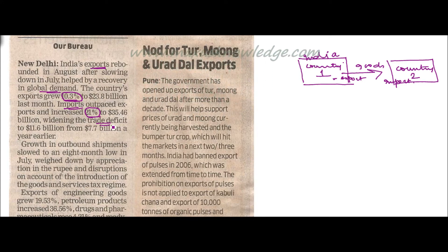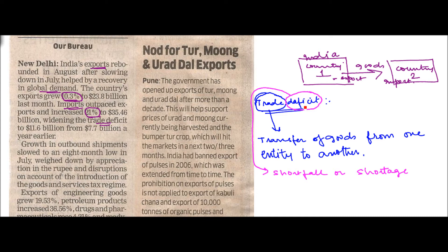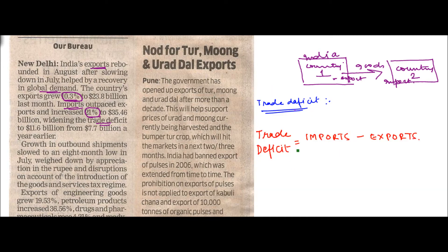So what is trade deficit? Trade is the transfer of goods from one entity to another. In this case, between country one and country two. Deficit means shortfall or shortage. So trade deficit is defined as the value of goods being imported minus the value of goods being exported.